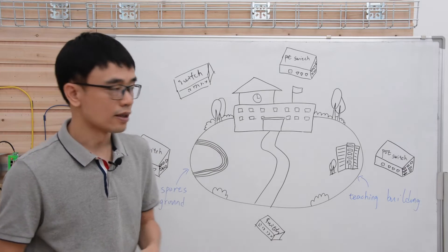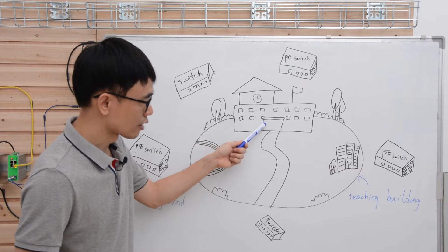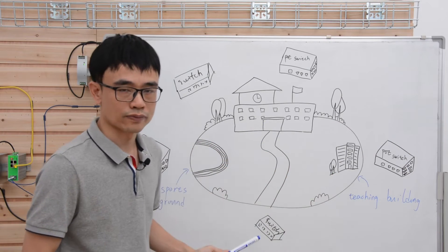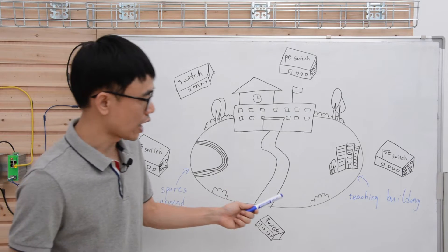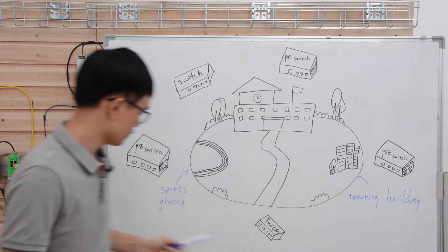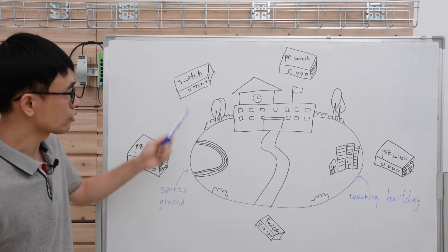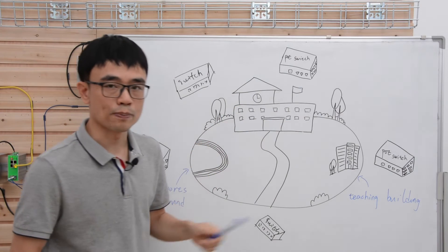In the star topology network, we should have a central switch here and link to all the edge switches. But you can see what is the challenge. There's teaching building, there's sports ground. Also, there's some trees that could block the wire.